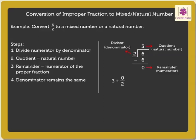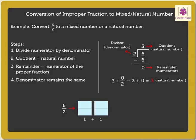Look. We got 3 plus 0 upon 2, which is equal to 3 plus 0, which is equal to 3, which is a natural number. Thus, 6 upon 2 equals 3.